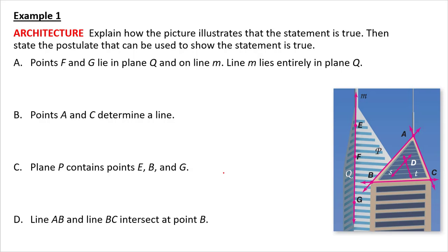Explain how the picture illustrates that the statement is true. Then state the postulate that can be used to show the statement. I look at this as like a picture of two buildings in a city. Points F and G lie in plane Q, so the side of this building here, and on line M. Line M lies directly in plane Q.